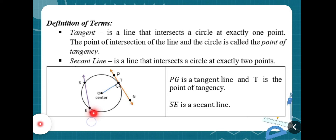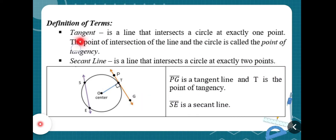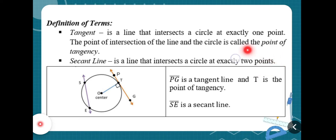A secant line is a line that intersects a circle at exactly two points. Here, the secant line is line SE. The difference between the two is that a tangent line intersects a circle at exactly one point, while a secant line intersects a circle at exactly two points.